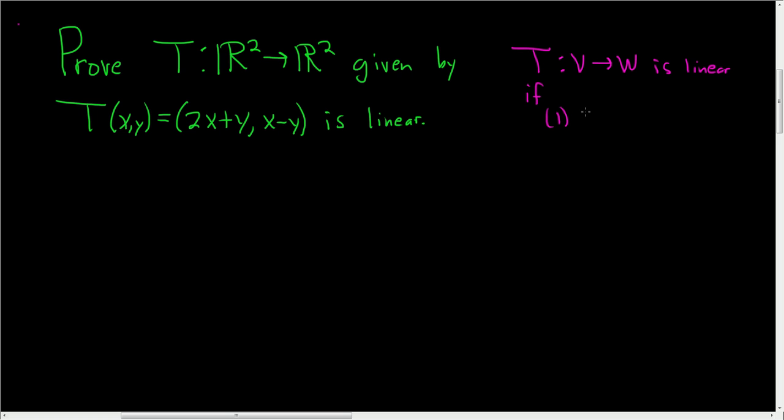So the first condition is that T of x plus y is equal to T of x plus T of y. And this condition has to be true for all vectors x and y in our vector space V.